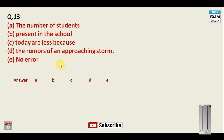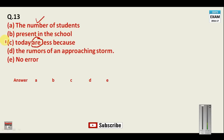Question number thirteen: 'The number of students are present in the school today are less because of the rumors of an approaching storm.' There are two phrases: 'a number of' is considered plural, but 'the number of' refers to the number itself, which is always singular. So in place of 'are' you must say 'is.' Your answer is C.